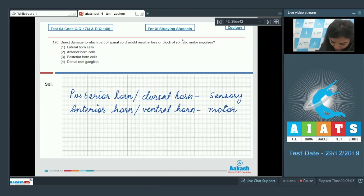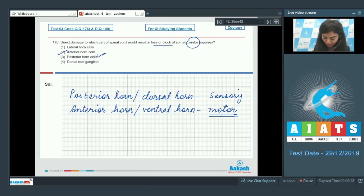The question is asking about the loss or block of motor impulses. These are regulated by anterior horn cells. The correct answer here would be option number 2, anterior horn cells, which are associated with motor impulses. Whereas the posterior horn cells are associated with sensory function. So the correct answer is option 2.